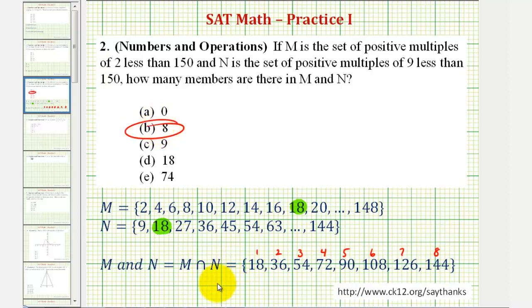But because listing all of these out is fairly time consuming, let's take a look at some other strategies to solve this problem. Again, the key to recognize is that if we want members that are in M and N, and since two and nine don't share any common factors, we're looking for multiples of two times nine, or 18, that are positive and less than 150.